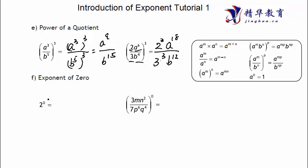There's one thing called the exponent of 0. Just remember: any number to the power of 0 equals 1, always. No matter how complex the expression inside is, if the power is 0, the answer is just 1.